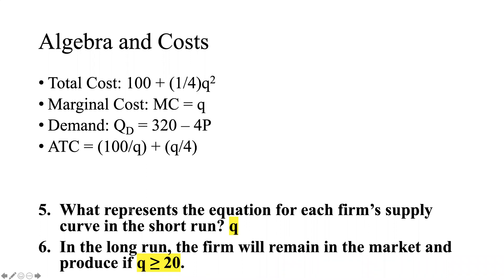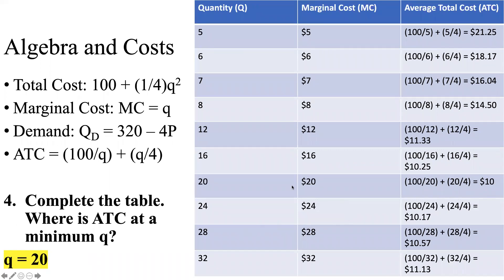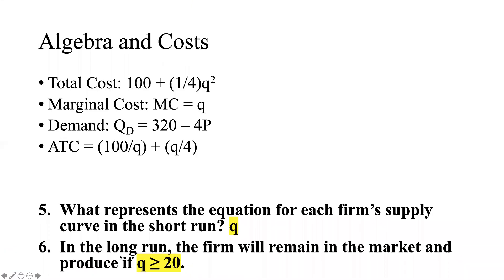Question 5 asks what represents each firm's supply curve in the short run. Remember, each firm's supply curve in the short run is determined by where the marginal cost curve is. Since marginal cost equals Q, the supply curve is just Q. For question 6, in the long run the firm will remain in the market and produce if quantity is greater than or equal to 20, because the minimum ATC occurs at a quantity of 20.